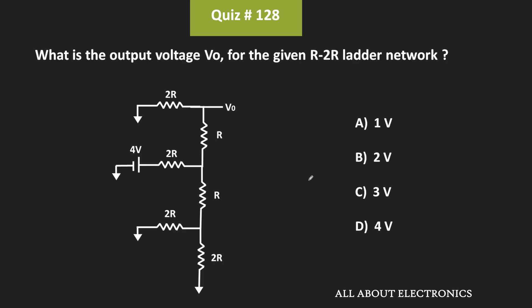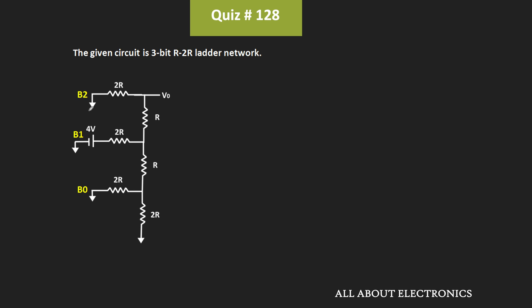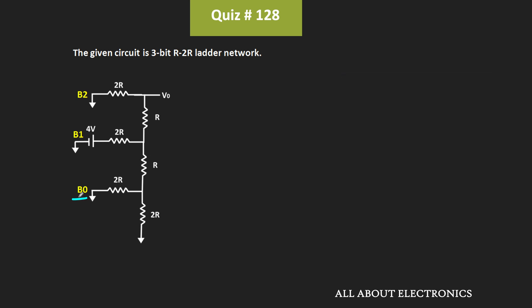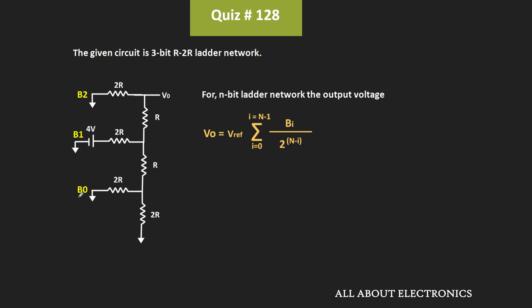In this example, we have been given an R2R ladder network and we have been asked to find the output voltage. Whenever we have this R2R ladder type of DAC, the input to the top resistor represents the MSB, while the input to the bottom resistor represents the LSB. So in this case, this bit is B2 while this bit is B0. As discussed in the video on the R2R ladder DAC, the output voltage Vout can be given by the expression: Vout equals V_reference times the summation from i equals 0 to n minus 1 of Bi divided by 2 to the power n minus i, where n is the number of bits and Bi is the binary value of each bit.